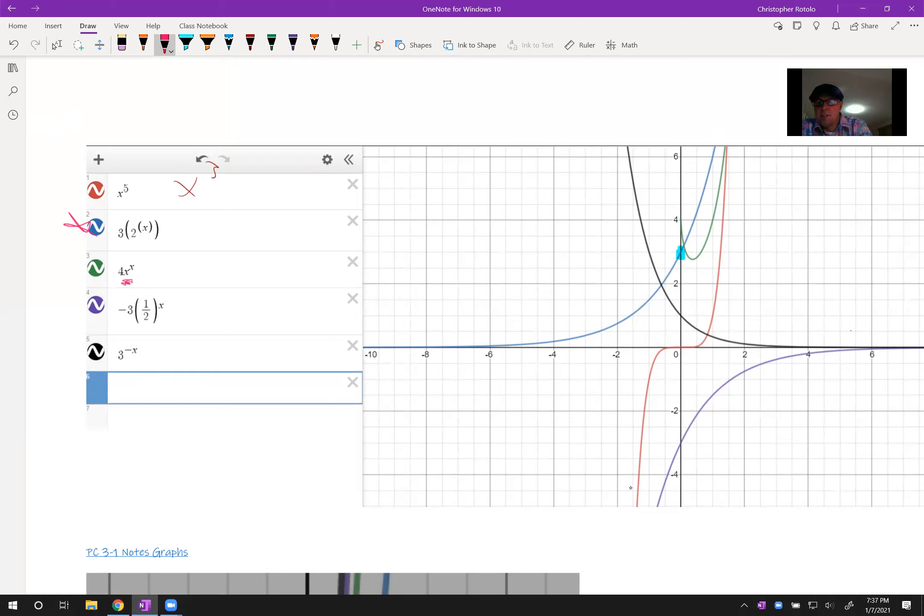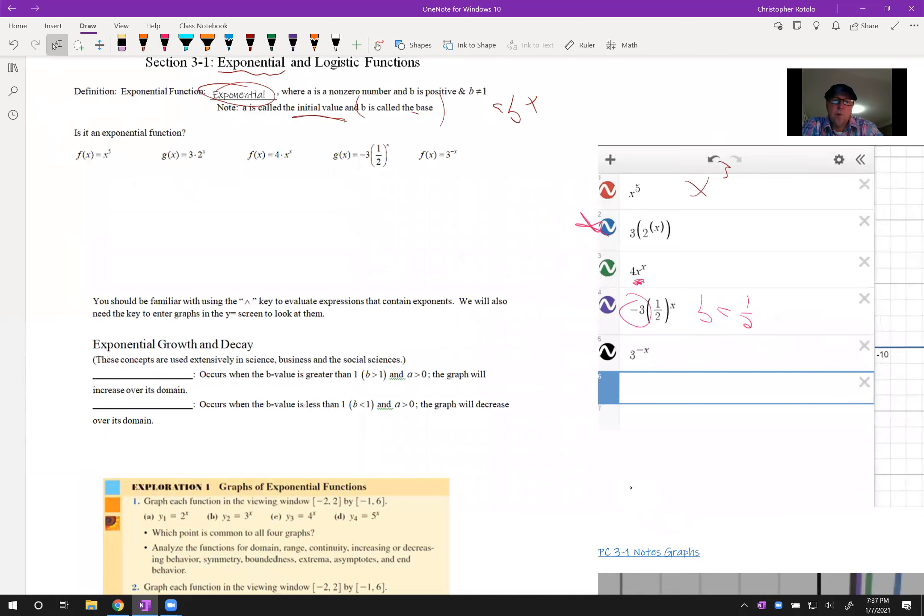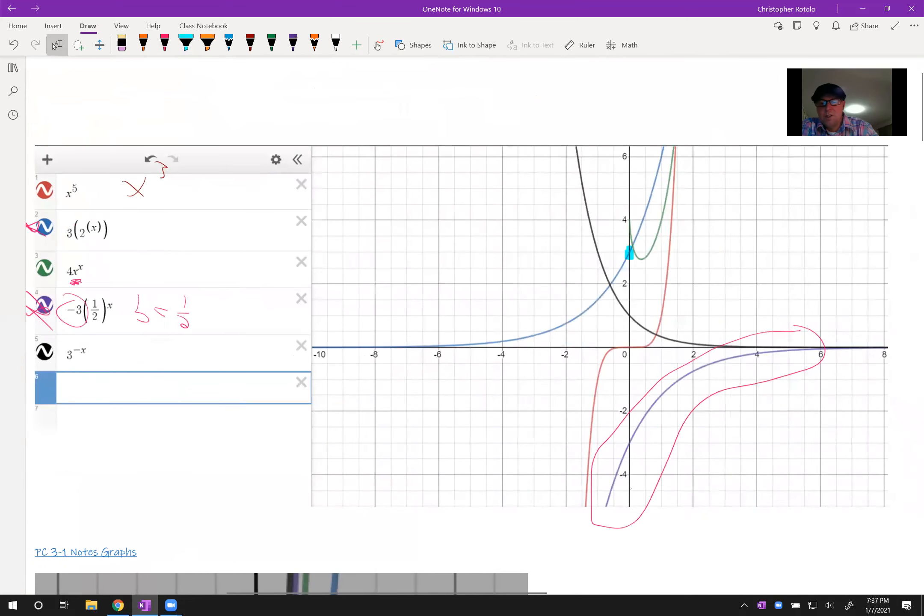Now we're up to this purple one. Let's take a look here. We have one half. So I can say b is one half. We have an a value of negative three. What do we say about those a values? Non-zero number, so that would be okay. This one looks like it's in pretty good shape. It doesn't exactly look like exponential growth or decay, but we have this a value is negative. So we're going to flip the whole thing over the x-axis. So it has a reflection.